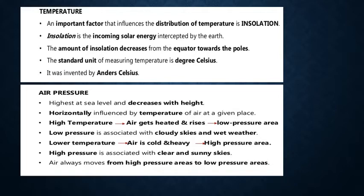Air pressure is highest at sea level and decreases with height. Horizontally, it is influenced by the temperature of air at a given place. When air gets heated, it rises, creating a low pressure area. Low pressure is associated with cloudy skies and wet weather. Where air is cold and heavy, there will be a high pressure area. High pressure is associated with clear and sunny skies. Air always moves from high pressure areas to low pressure areas.